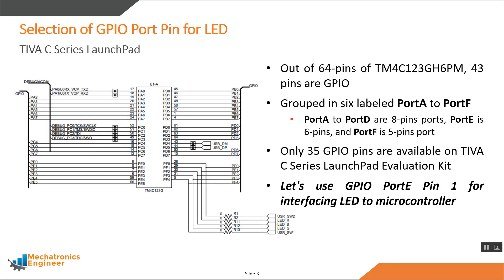First of all we need to select a GPIO pin for interfacing the LED. This schematic shows the ARM Cortex M4 microcontroller available on the Tiva C-Series Launchpad evaluation kit. There are 43 GPIO pins grouped into 6 ports labeled from port A to port F. Port A to port D are 8-pin ports, port E is 6-pin, while port F has only 5 pins. On the Tiva C-Series Launchpad, only 35 of these 43 GPIO pins are available.